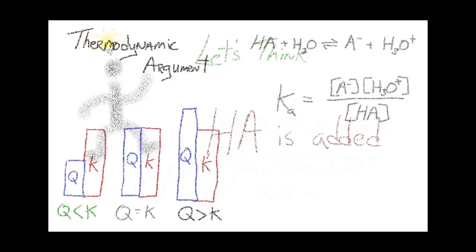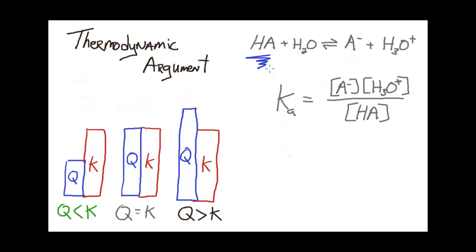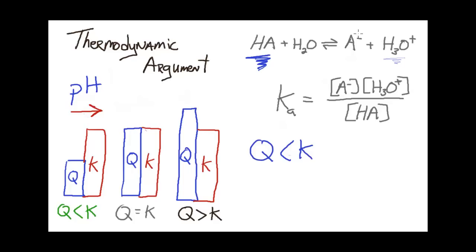Now let's imagine we add HA to the system at equilibrium and build a thermodynamic description of what happens to the H₃O⁺ concentration and therefore the pH. Adding HA will cause the denominator of the Ka expression to be larger upon the perturbation, which means Q will end up being less than K. If Q is less than K, the system will proceed towards products until equilibrium is re-established. As a result, the H₃O⁺ concentration will go up, and once equilibrium is established, the pH will go down. This should make sense — if you add more acid to a system, the pH goes down and the H₃O⁺ concentration goes up.